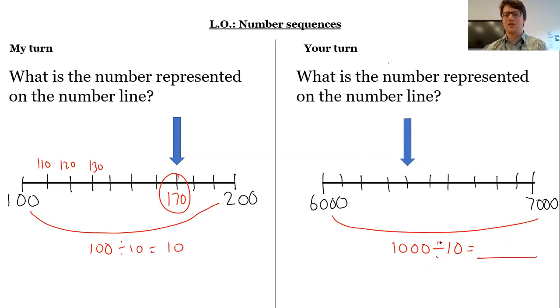Okay. So 1,000 divided by 10 is 100. So each of these parts is worth 100. So 6,100, 6,200, 6,300. So that means that this mark here must be 6,400.